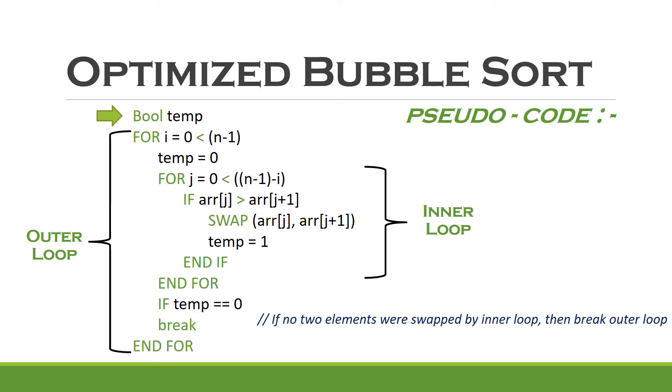We can just introduce a flag and change its value in the inner loop if there is a swap operation executed in a given pass. In case there is a pass detected without a swap operation, we will immediately break the outer loop without executing the remaining passes.